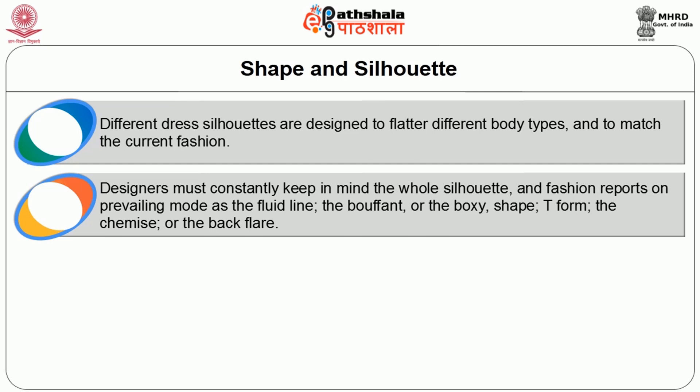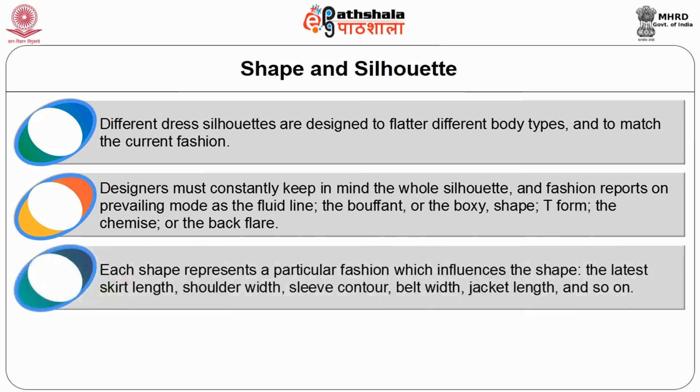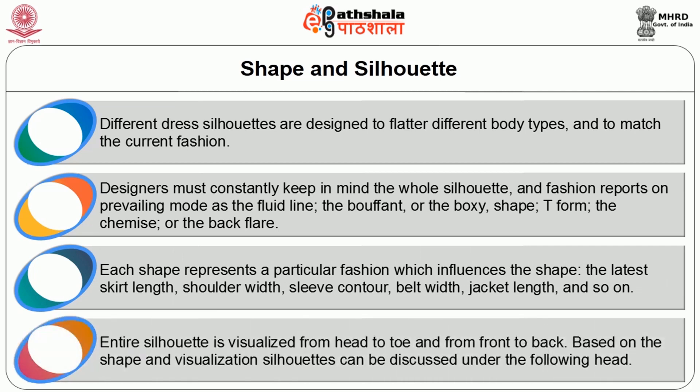Different dress silhouettes are designed to flatter different body types and to match the current fashion. Designers must constantly keep in mind the whole silhouette and the fashion report on prevailing mode as the fluid line. Each shape represents a particular fashion which influences the shape, the latest skirt length, shoulder width, sleeve contour, belt width, jacket length and so on. Entire silhouette is visualized from head to toe and from front to back. Based on the shape and visualization of silhouettes, it can be discussed under the following chapters.